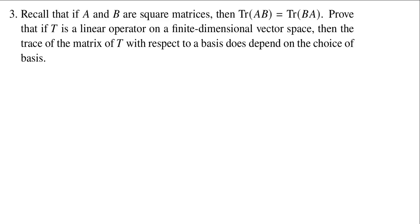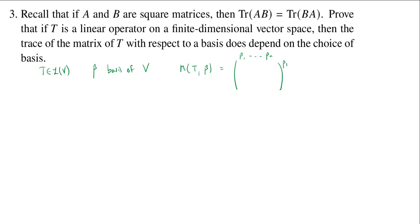That's something we alluded to in the previous video. Let's see how we do this. First, it's probably good to remind ourselves that if I have beta as some basis of a vector space V, and T is a linear operator on V, then the matrix of T with respect to beta — we'll call those vectors beta 1 through beta n — the entries in this matrix tell you how to write the image of T of beta i in terms of the beta basis.